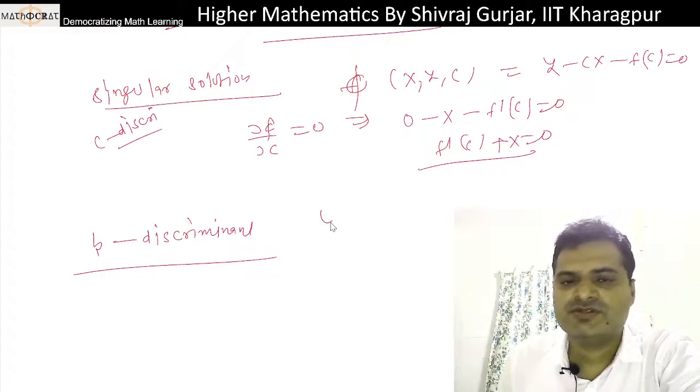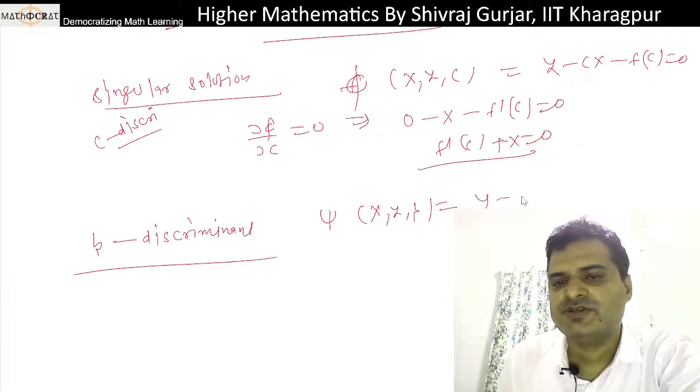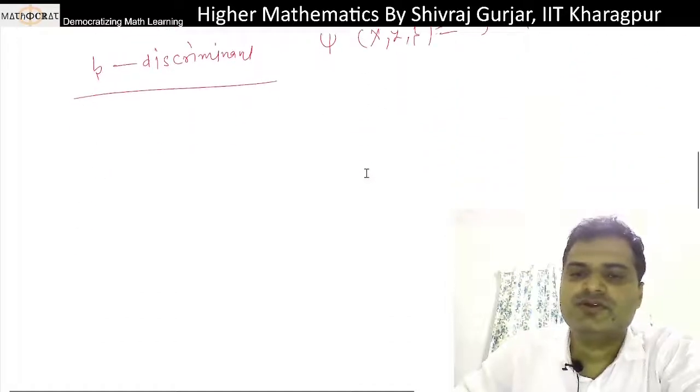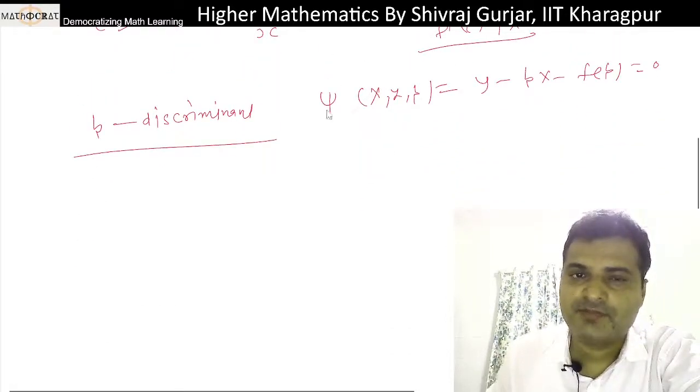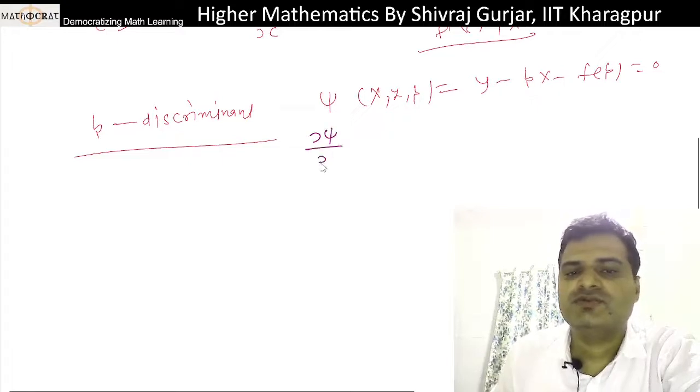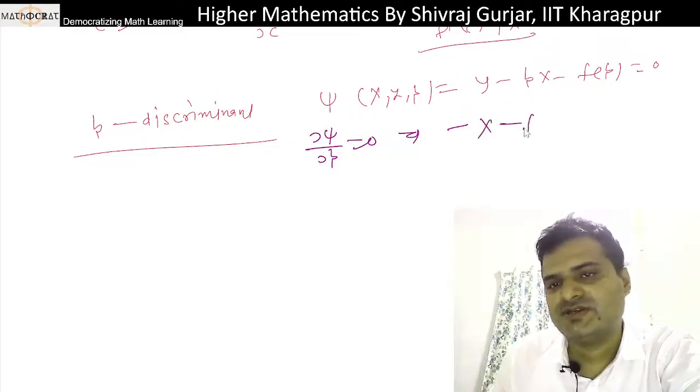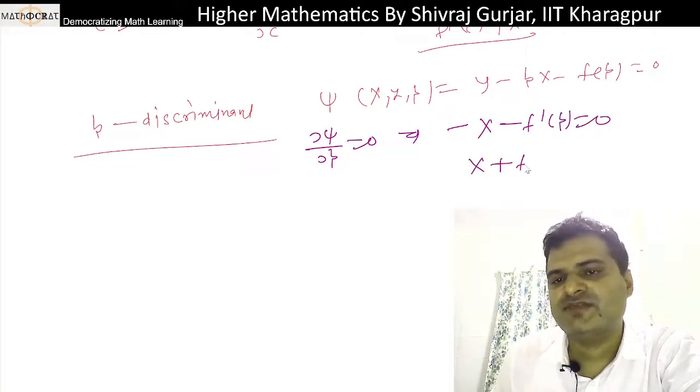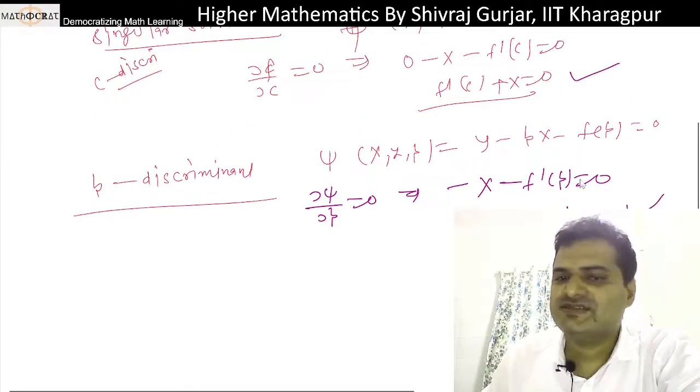This is p, x, y, p: ψ = y - px - f(p). If we differentiate with respect to p, ∂ψ/∂p = 0 gives -x - f'(p) = 0, so x + f'(p) = 0. This is the same thing.